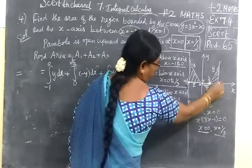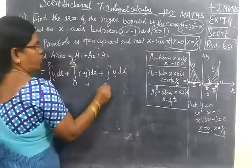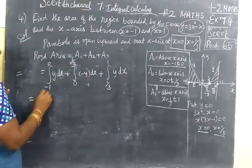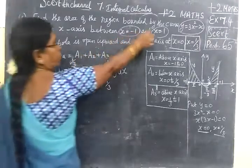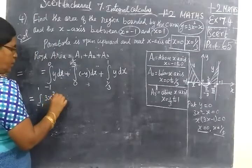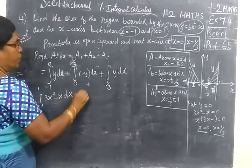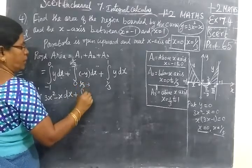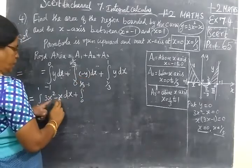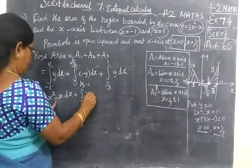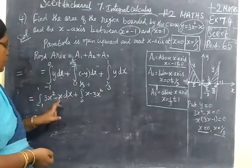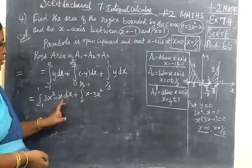The limit for A2 is 0 to 1 by 3. And for A3, the limit is 1 by 3 to plus 1. Now substituting y = 3x² minus x, so we write 3x² minus x for y in each integral.